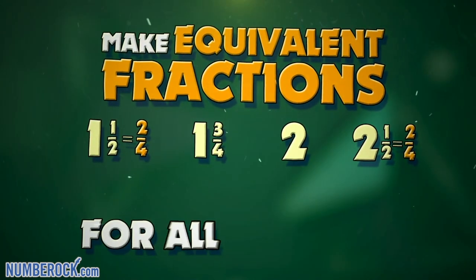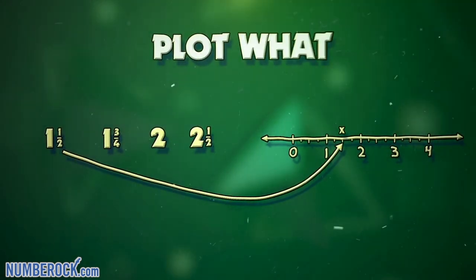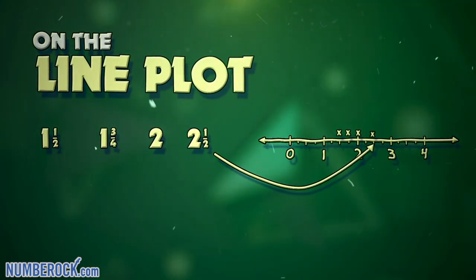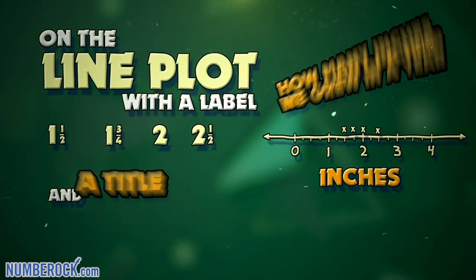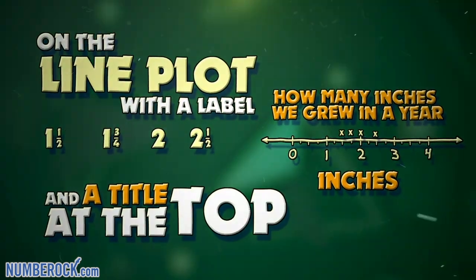First find a common denominator. Make equivalent fractions for all the data. We'll plot what you got on the line plot with a label and the title at the top.